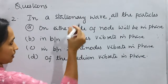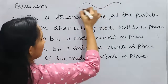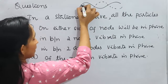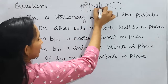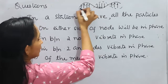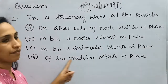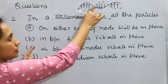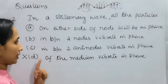Let us draw the pattern of stationary waves. Suppose I consider particles in one loop — they will be vibrating in the upward direction. So all particles of the medium vibrating in phase is not a correct option, because different particles will be in different states of vibration.